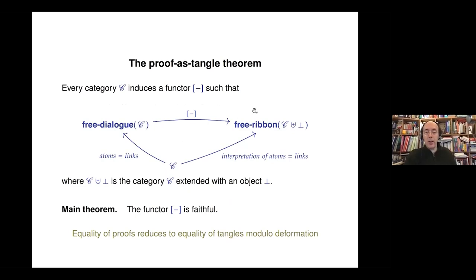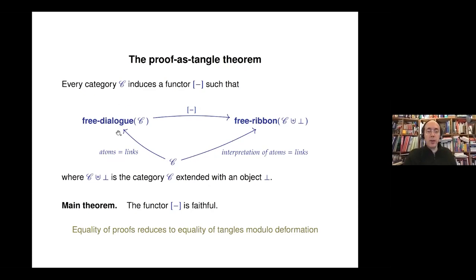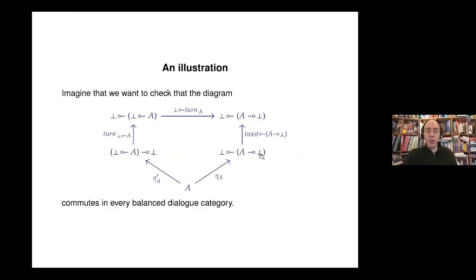Every time we have a ribbon category with a fixed object ⊥, it defines a dialogue category with two negations on the left and right. Because it is the free dialogue category, we can construct a functor into the ribbon category. The main theorem is that this functor is faithful: two proofs in this logic are equal in this category if and only if the underlying ribbon structure is the same.